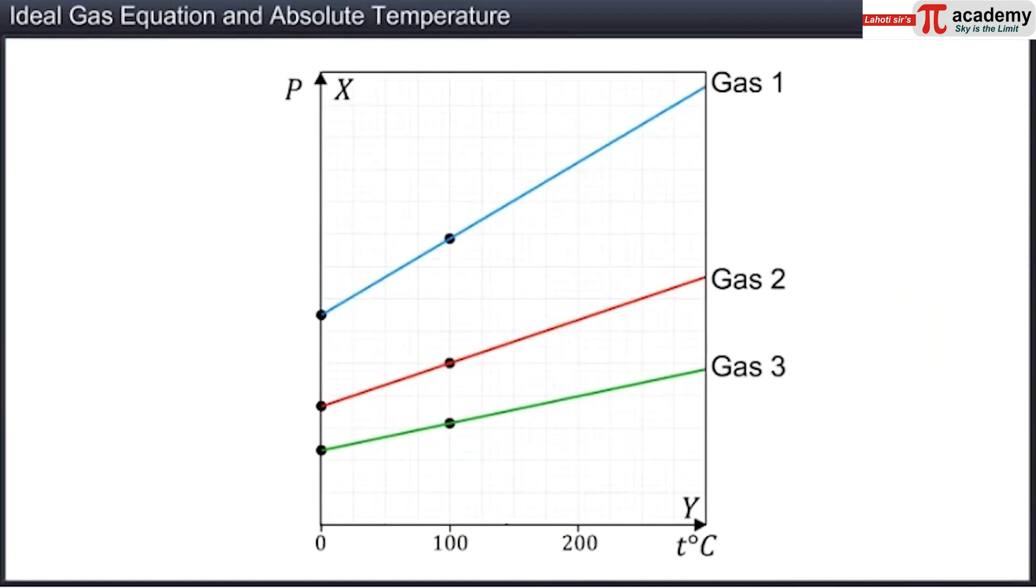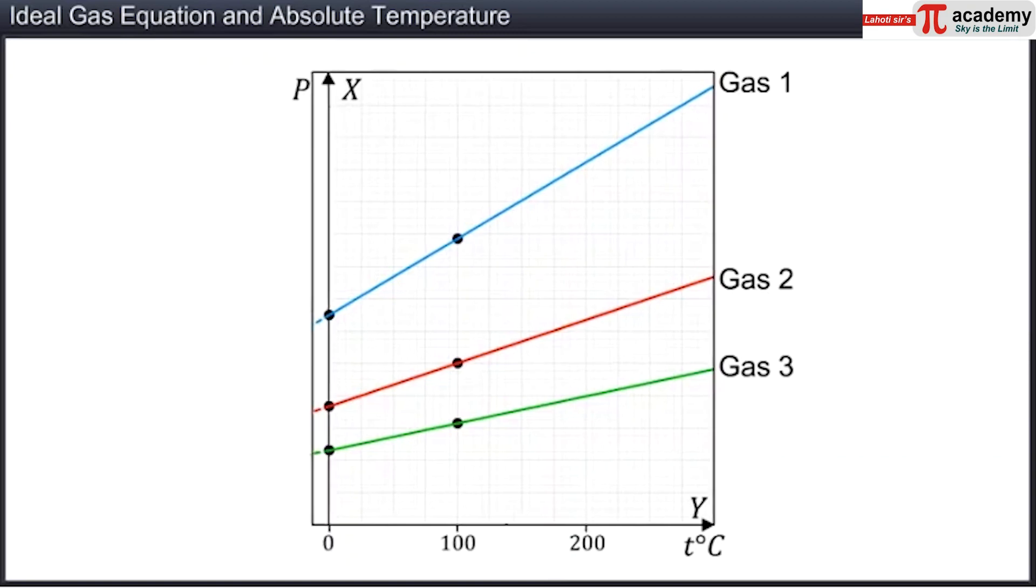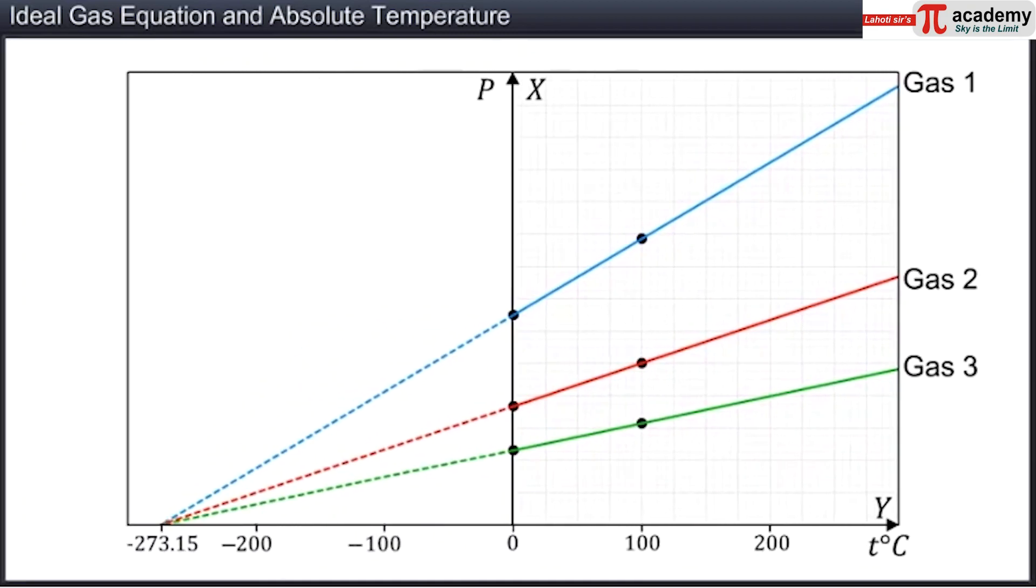Let's look at the pressure-temperature graph for different gases at low density. When extended towards negative temperatures, all these straight lines meet at a point represented by the temperature minus 273.15 degrees centigrade.